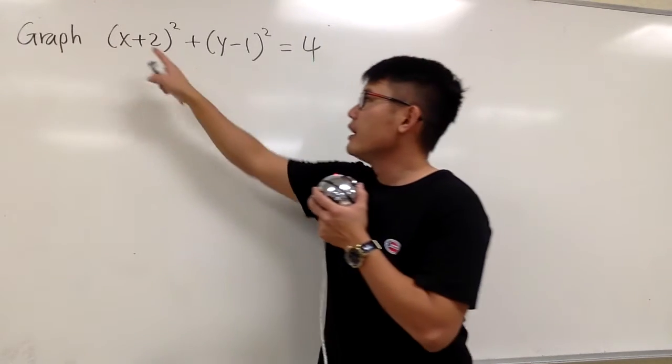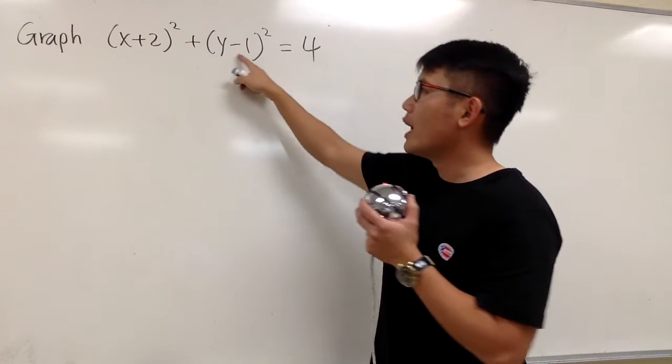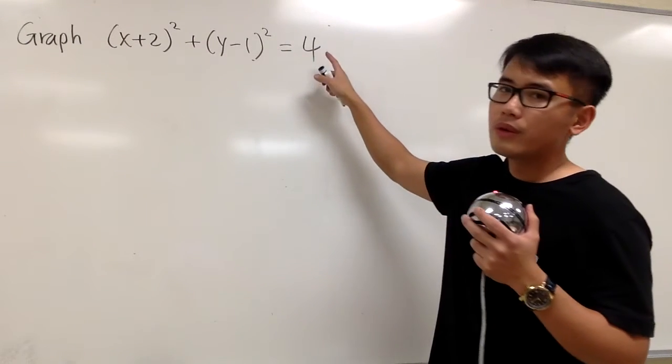Here we're going to graph this equation: x plus 2 in parentheses, and then we square that, and then we add it with y minus 1 in parentheses, and then we square that, and this is equal to 4.